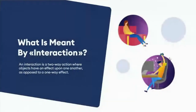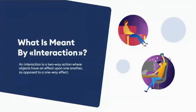Before we dive into interactive e-learning, it's essential to be clear about what is meant by interaction. An interaction is a two-way action where objects have an effect upon one another, as opposed to a one-way effect. In the learning field, the term interaction is often used in connection with active learning — the idea that learners learn best when they are required to participate actively, rather than simply reading a text or watching a video. In other words, it is always better to have learners do than watch.